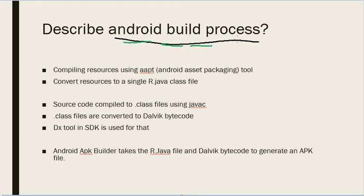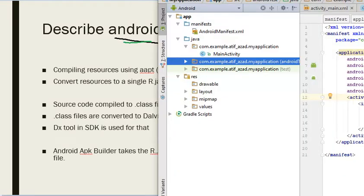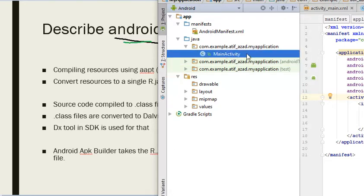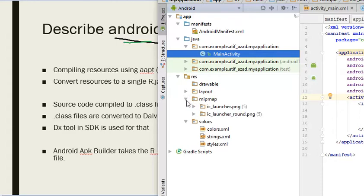Let's look at the Android build process — how these sources are built in Android. We have these .java files and some resource files. I can show you with the help of this project. We have here an app which has a manifest file, the Java sources, the MainActivity.java file, and then the resource files where you have layouts, values, strings, images, icons — everything.